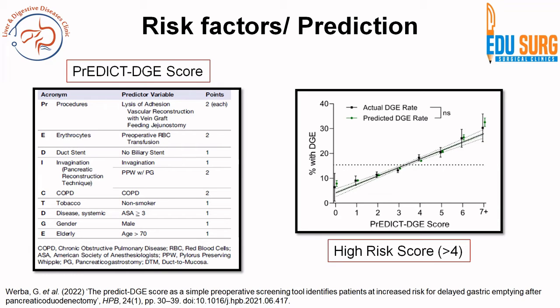Regarding risk factors and prediction, one important scoring system is the PREDICT DGE score. The acronym covers: P for procedures, E for erythrocyte (pre-operative RBC transfusion), absence of biliary stent scores lower, invagination technique scores lower, COPD is a risk factor, and non-smoker scores lower. A score greater than or equal to 5 (or greater than 4) indicates high risk for DGE. Additional risk factors include venous or vascular reconstruction, age greater than 70, male gender, and ASA score greater than or equal to 3.